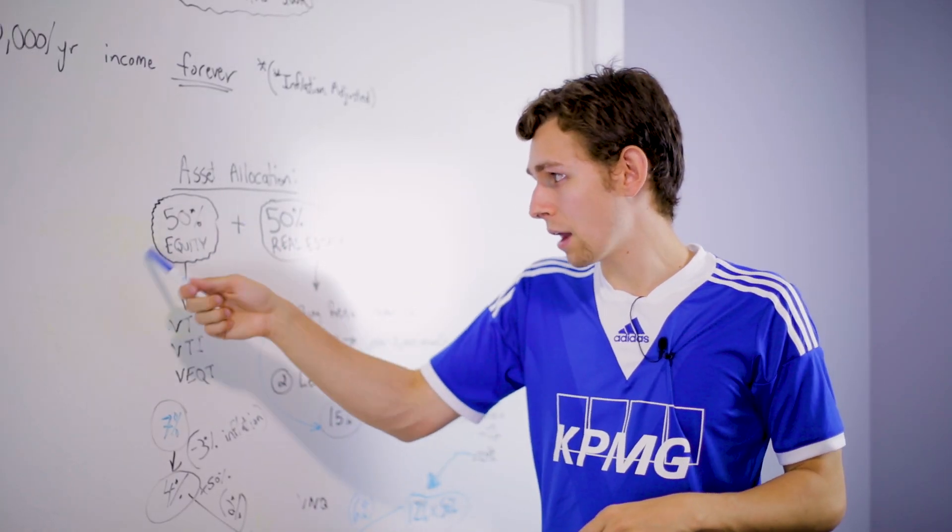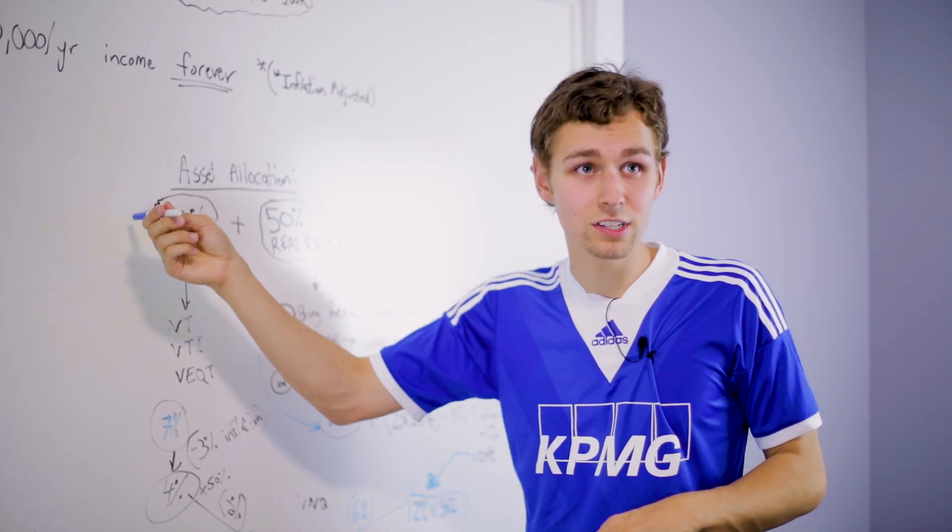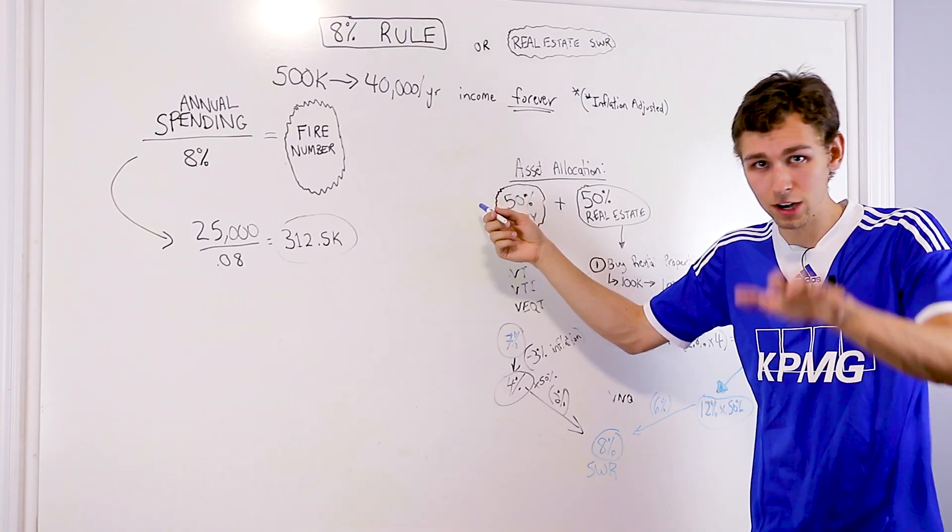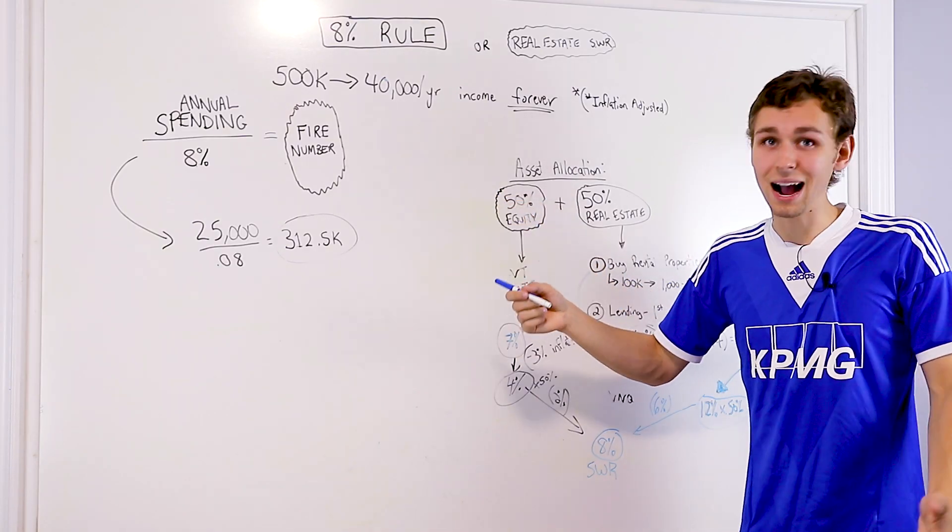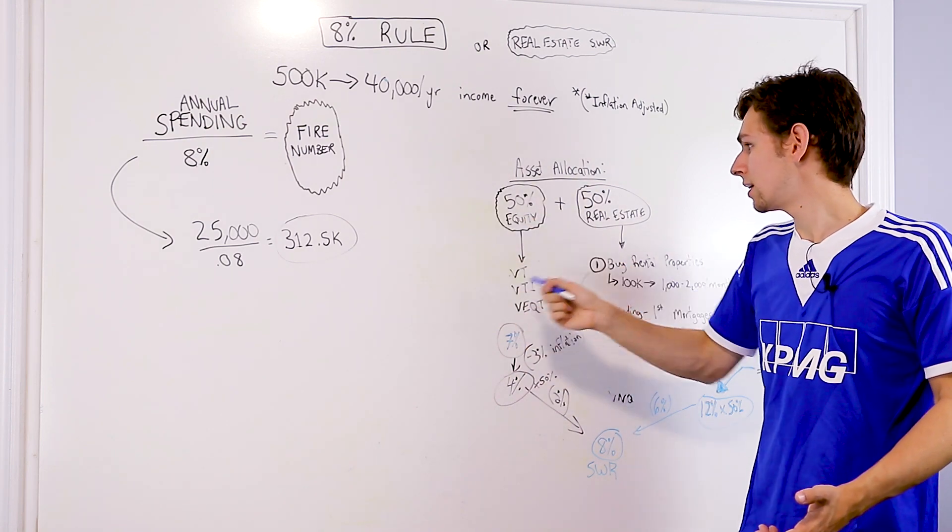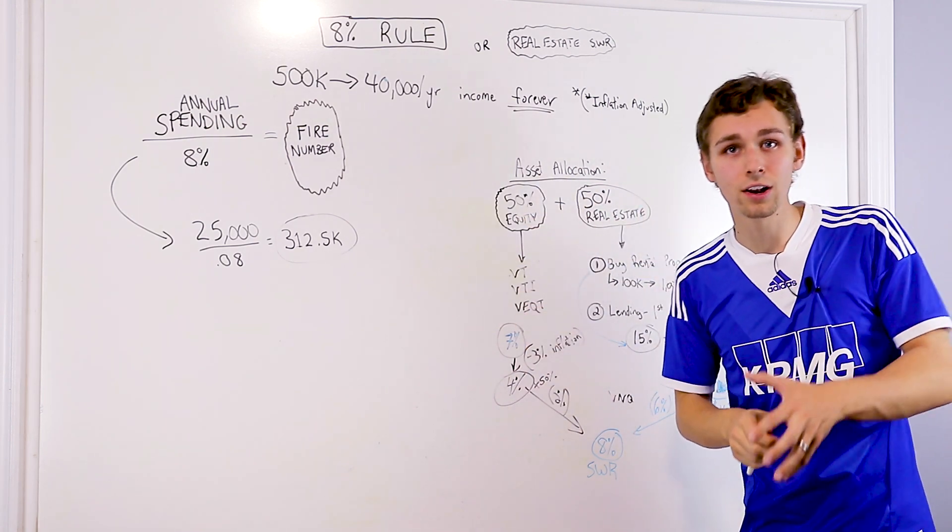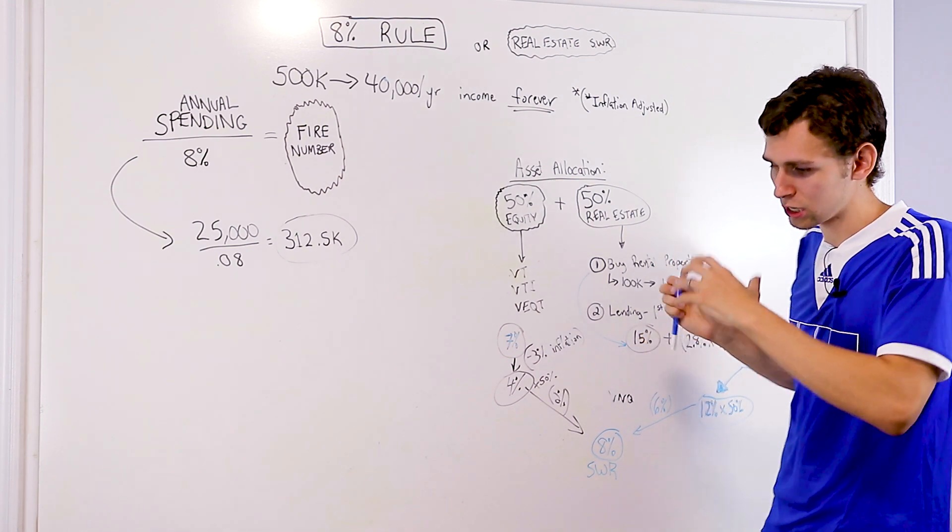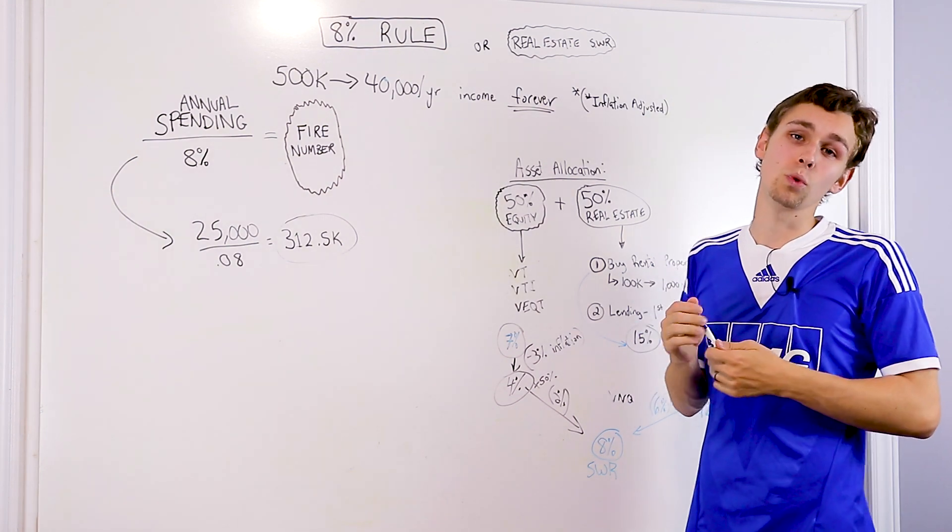I also like to see this equities portfolio consisting of your tax-free savings account being maxed out. Take advantage of that. Your RRSP, max that out. Take advantage of that. Use your tax registered accounts here or here. I want to see you taking advantage of those as well. So it's not just about the asset allocation. It's about using it in a tax efficient way as well.